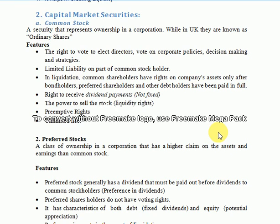In summary, preemptive rights mean that if you are a common stockholder and the company issues further common stock, they will first ask you whether you want to buy it. Only after existing stockholders have been offered the shares will they be sold to outside investors.